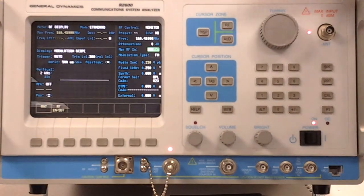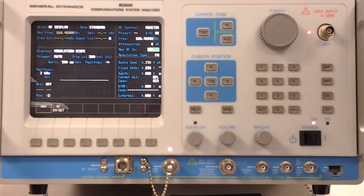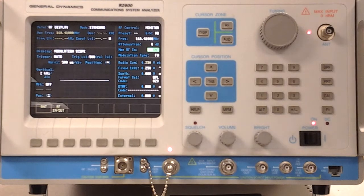In a quick brush by, this is the general operation of the R2600. From here, we can go into more detail on how to set it up for specific tests covering both transmitter tests and receiver sensitivity tests.